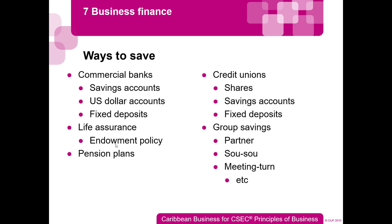There are a number of ways to save. Commercial banks are the obvious option — they offer savings accounts, fixed deposits, and foreign currency deposits where you can save by buying and selling foreign currencies. You also have life insurance, where insurance companies often attach a savings scheme to some policies, and pension plans. Outside of banks, credit unions let you buy shares to become a member and offer similar services including fixed deposits and savings accounts.